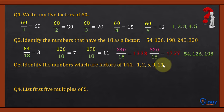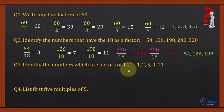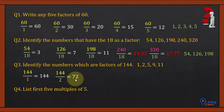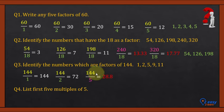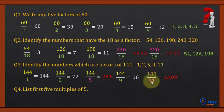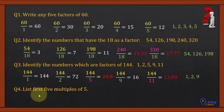Question 3: Identify the numbers which are factors of 144. We check which numbers completely divide 144. 144 ÷ 1 = 144, so 1 is a factor. 144 ÷ 2 = 72, an integer, so 2 is a factor. 144 ÷ 5 = 28.8, a decimal, so 5 is not a factor of 144. 144 ÷ 9 = 16, an integer, so 9 is a factor of 144. 144 ÷ 11 gives a decimal answer, so 11 is not a factor of 144. Therefore, 1, 2, and 9 are factors of 144.